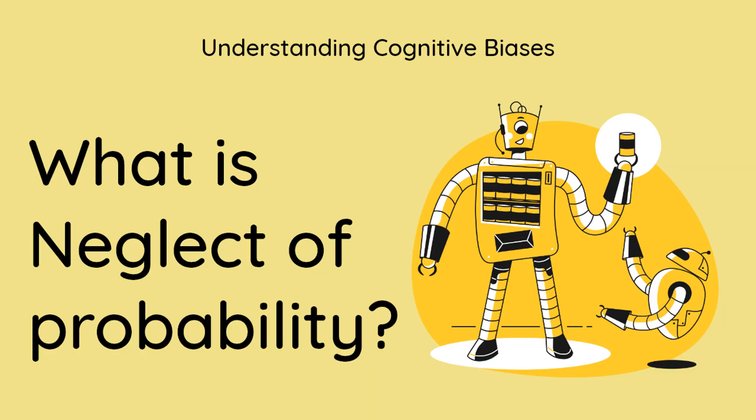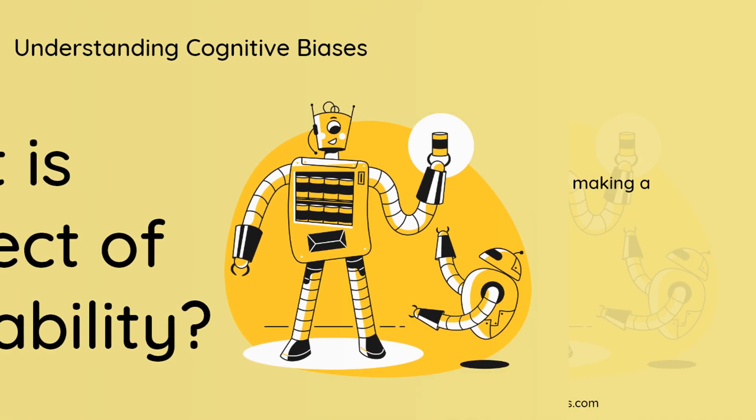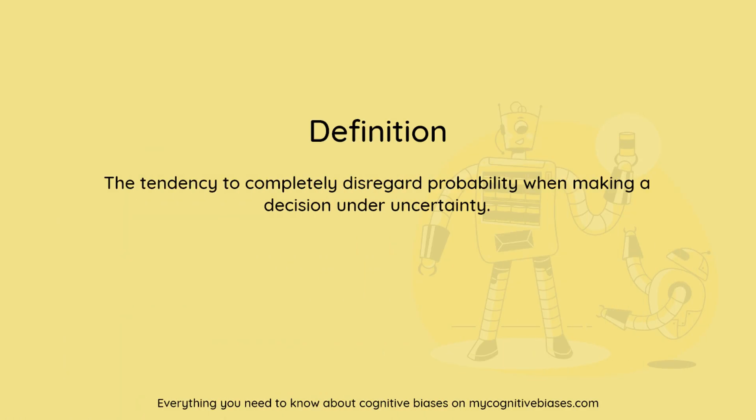What is neglect of probability? Definition: the tendency to completely disregard probability when making a decision under uncertainty.